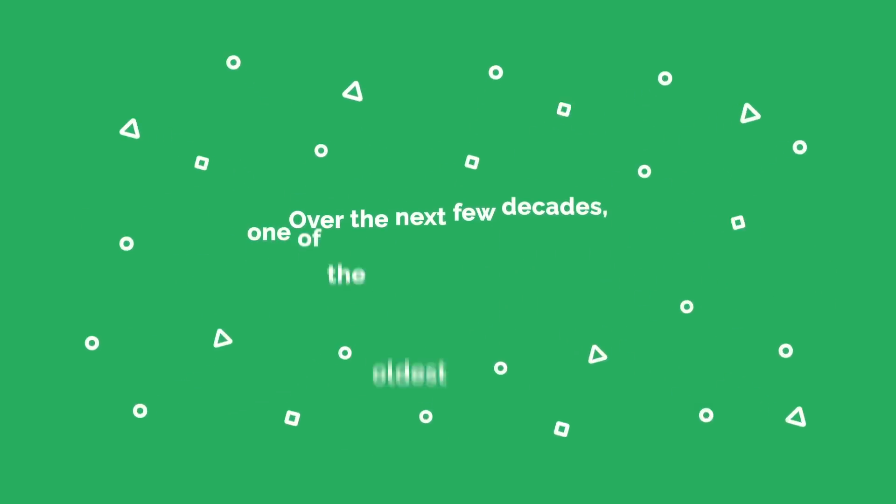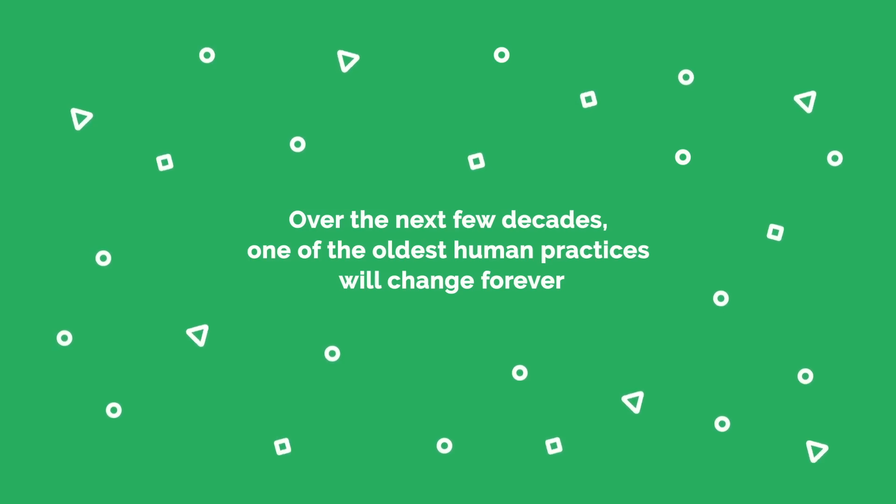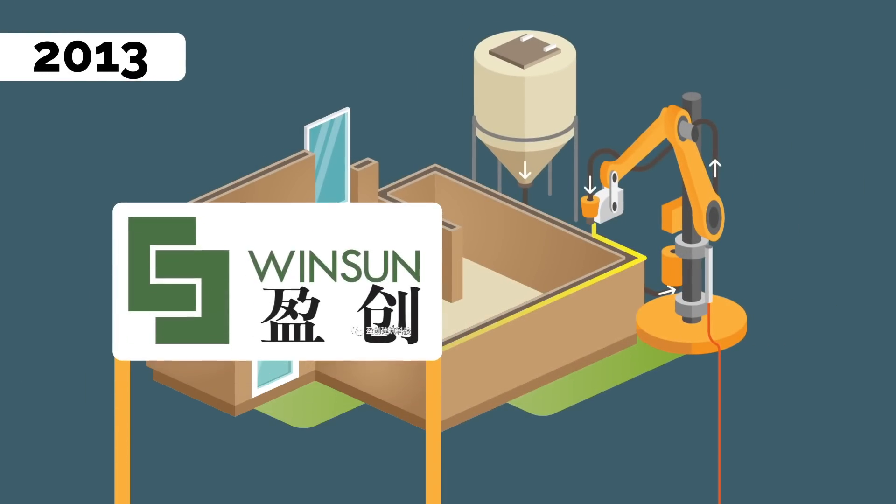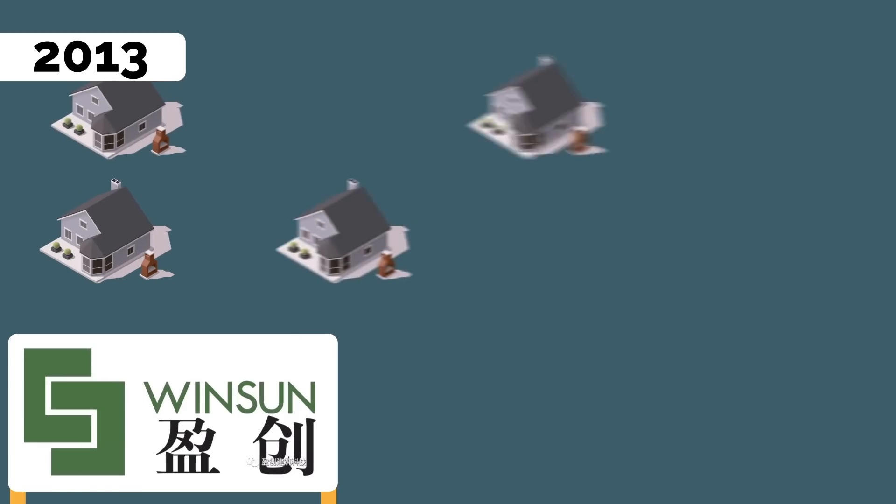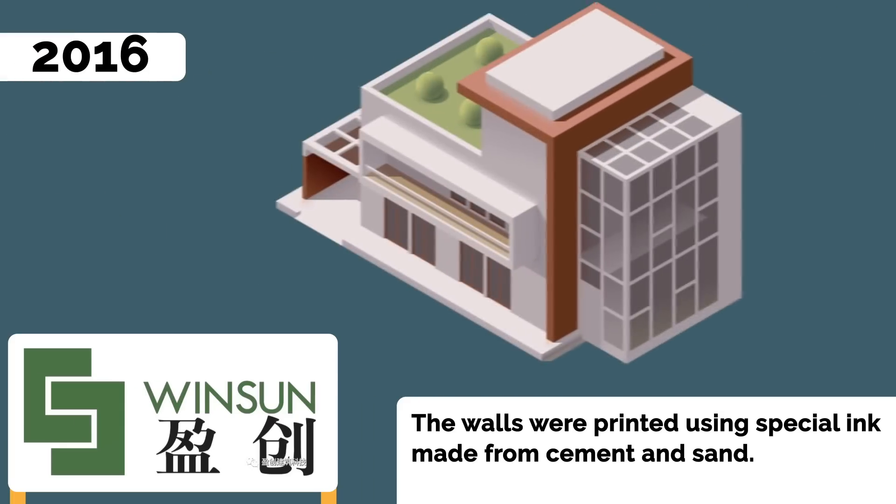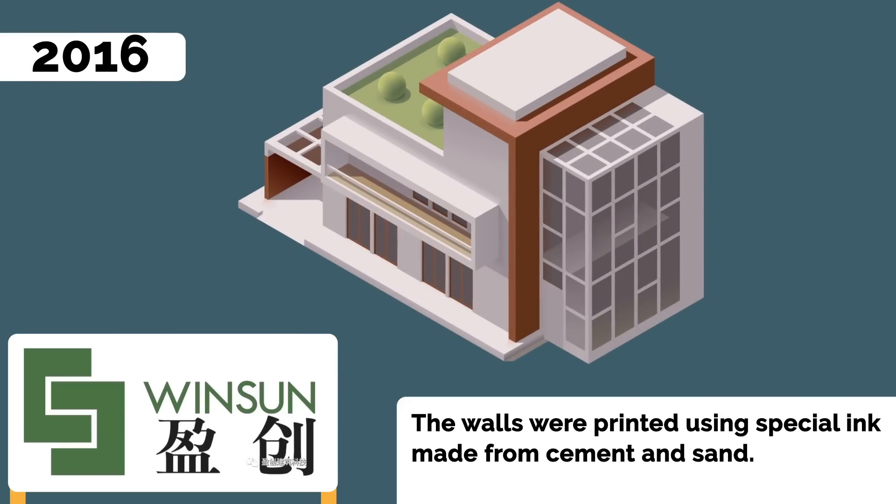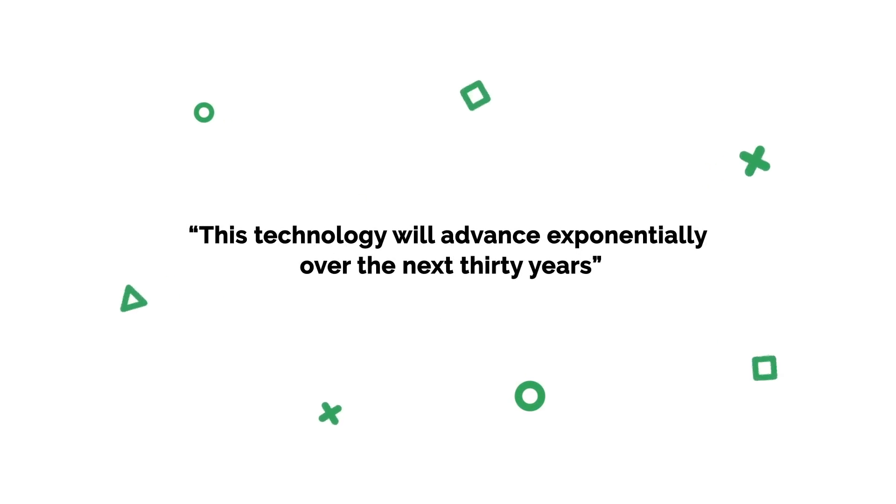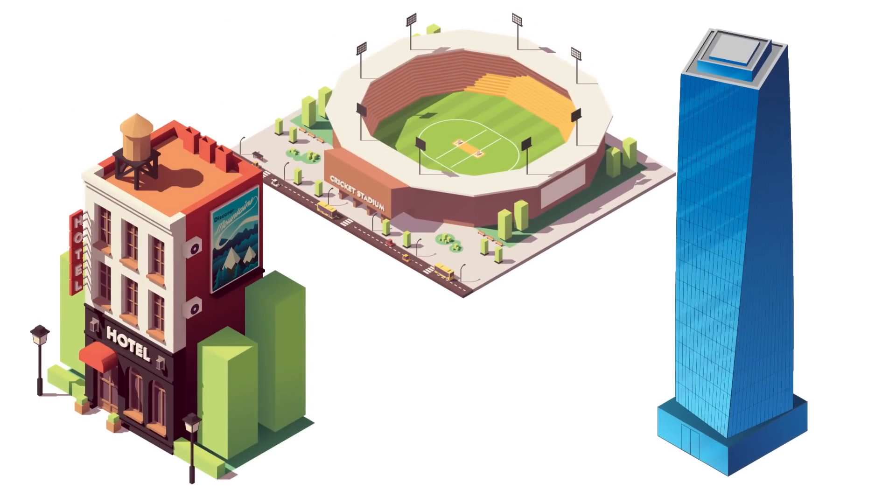Printed Buildings. Over the next few decades, one of the oldest human practices will change forever. Construction has been pretty much the same for hundreds of years. We still build houses out of wood, and we still cut brick and stone to make walls. But in 2013, a Chinese company called Winsun used a continuous 3D printer to construct 10 houses. The walls were printed using special ink made from cement and sand. In 2016, they used the same material to print a fully functioning office building. Each of these structures only cost a few thousand dollars to create, while leaving behind zero waste. The company claims this technology will advance exponentially over the next 30 years. And before you know it, we'll be printing hotels, stadiums, and even skyscrapers.